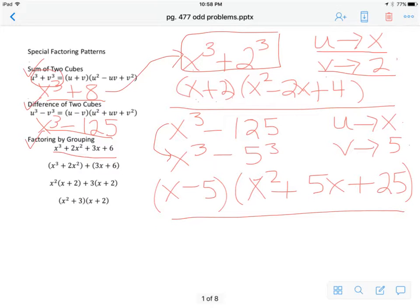The last method is called factoring by grouping and you can follow through here. The first step that you do is you put parentheses around the first two terms and around the last two terms. The first two terms then, you factor out the greatest common factor. Since they both had an x squared, you'll notice for x cubed and x squared, the greatest common factor there is x squared, factor it out of the parentheses and then divide both terms by x squared and you're left with x plus 2 inside of the parentheses.